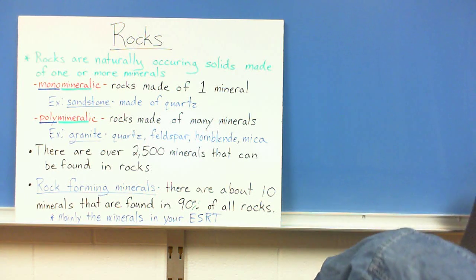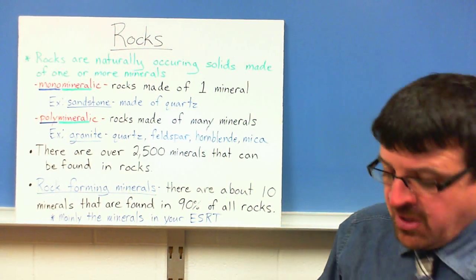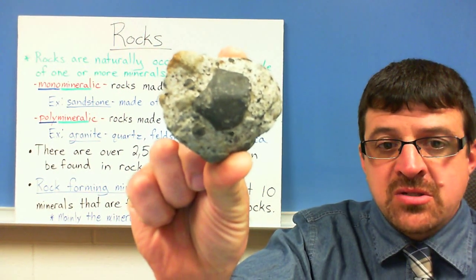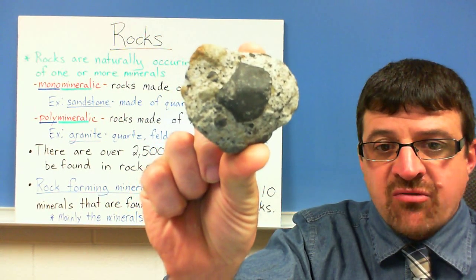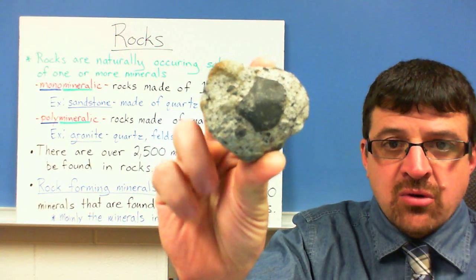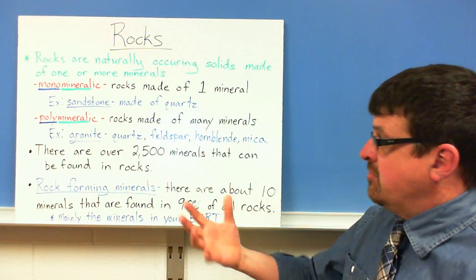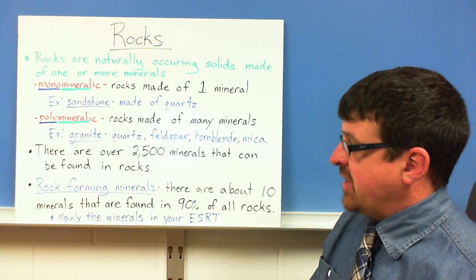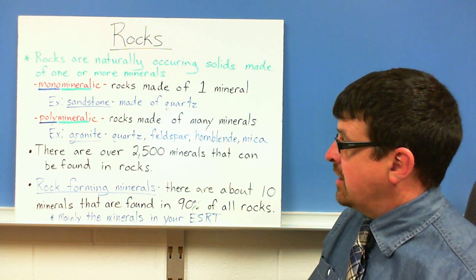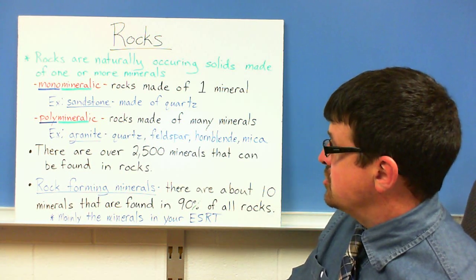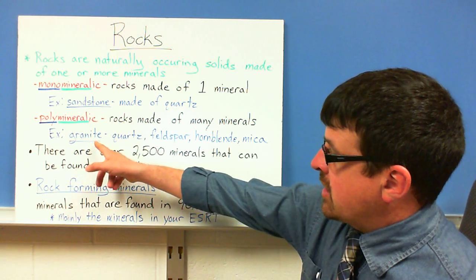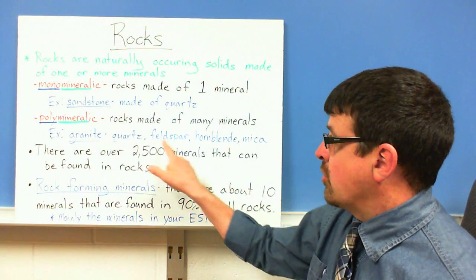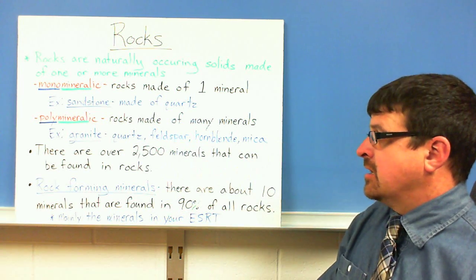Polymineralic is a rock that's going to be made of more than one mineral. You can see there are different pieces in there, so that's what makes it polymineralic — many minerals. Granite is another example of that. That was actually a conglomerate I just showed you. Granite can contain varying amounts of quartz, feldspar, hornblende, and mica.